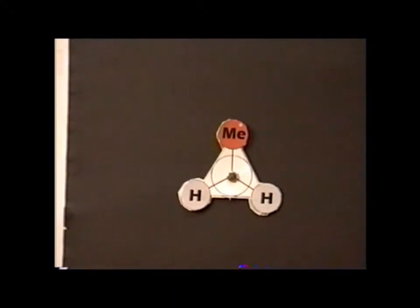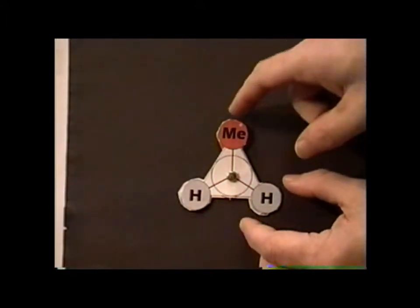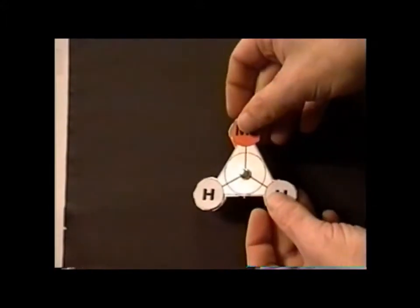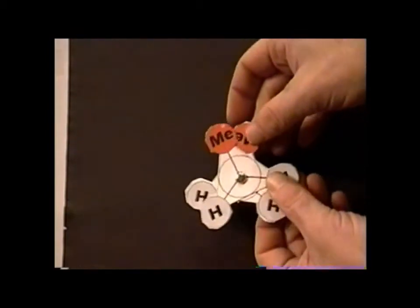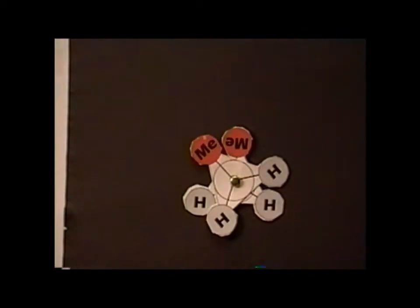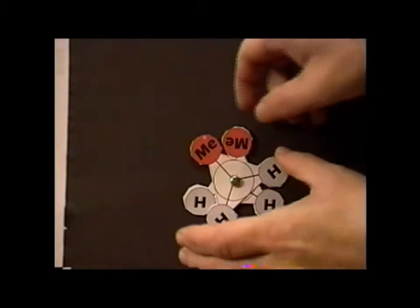If, for example, we were to change the substitution pattern of our ethane so that we have a methyl group attached to the front carbon and another methyl group attached to the back carbon, now we have butane. So now we have a greater number of named conformations.